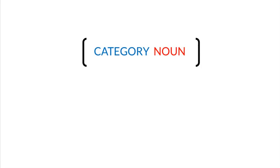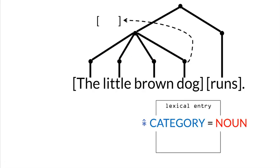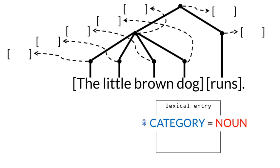In this case we want the AVM to contain the information that the lexical category is a noun. In order to include this information in our constituent structure, we are going to say that each node has a link to an AVM containing information about lexical categories. We call these separate but linked structures a module, and it can be said that these modules are projected from a node in the constituent structure. We will give the links to this module a label so that it's not confused with other links we will add later. We use the Greek letter lambda for this label.